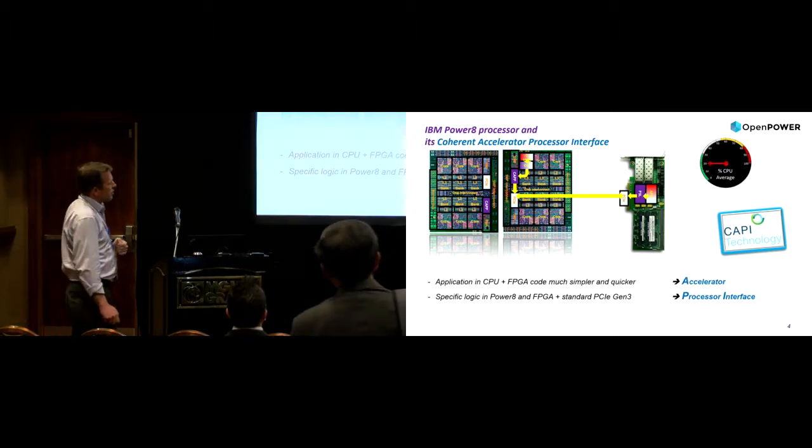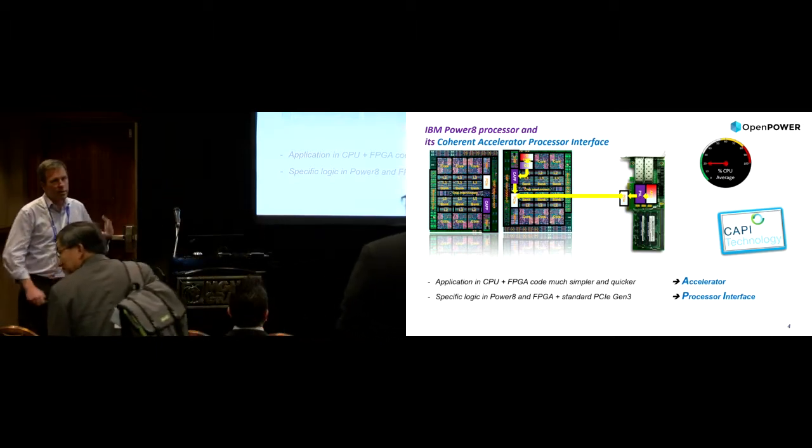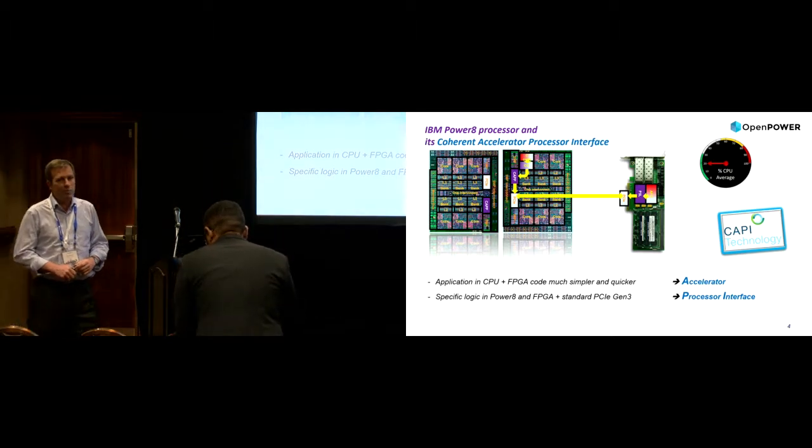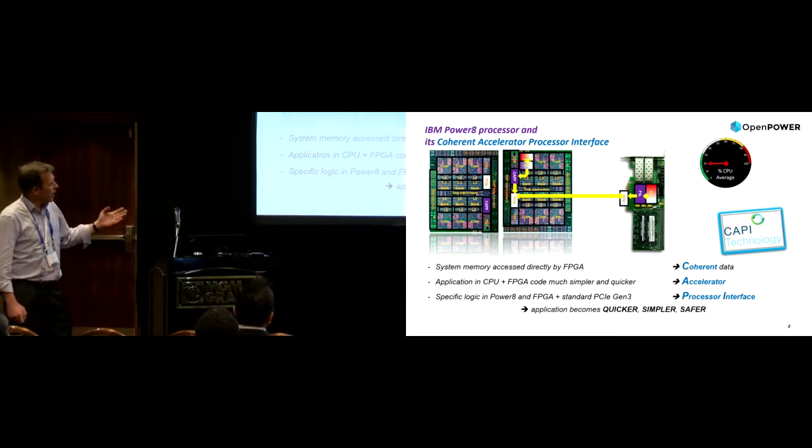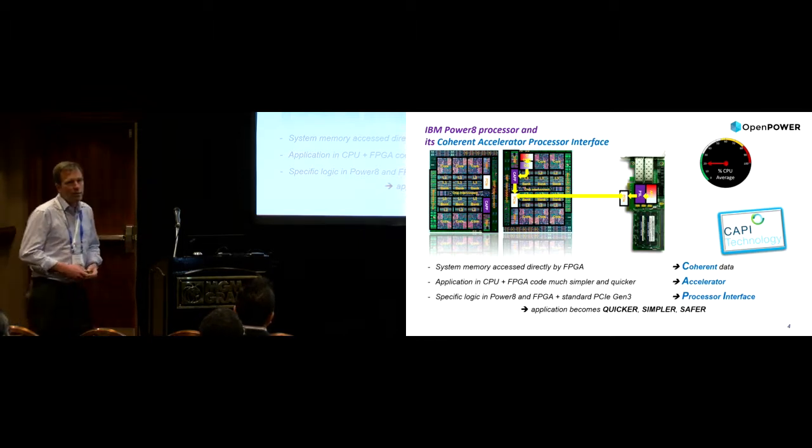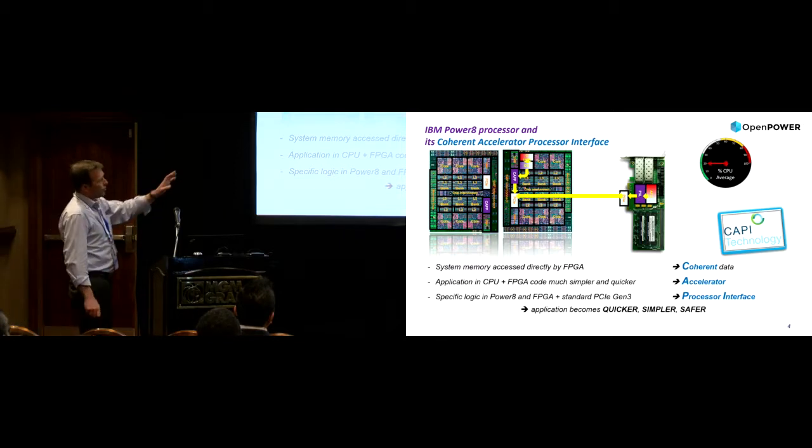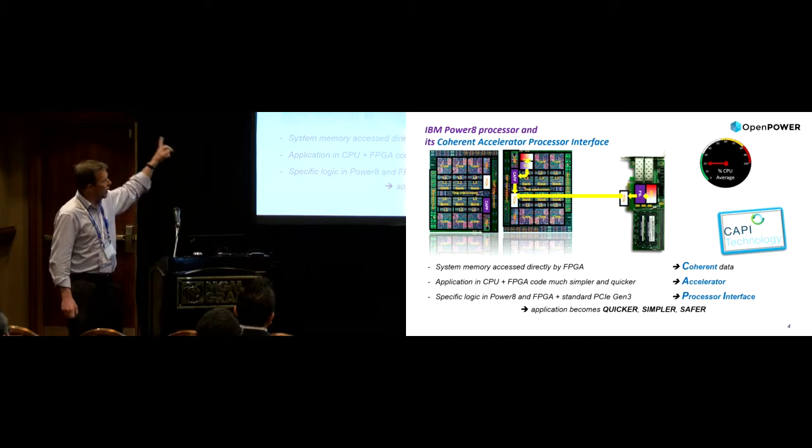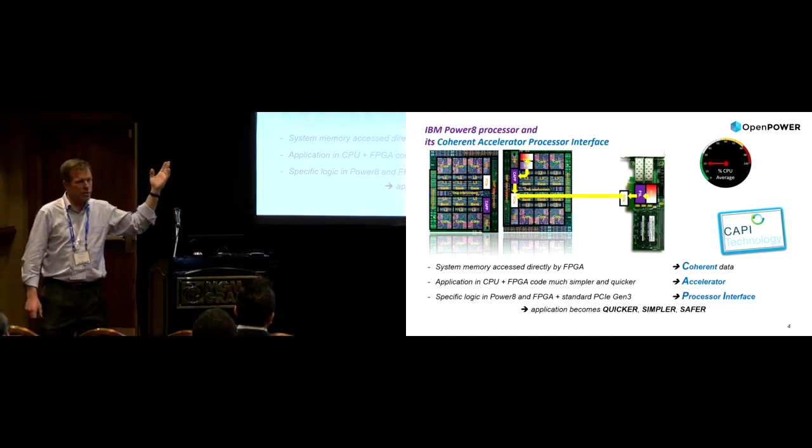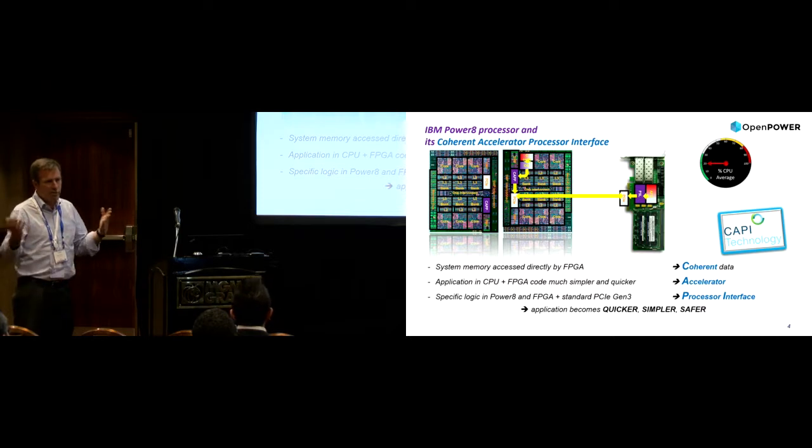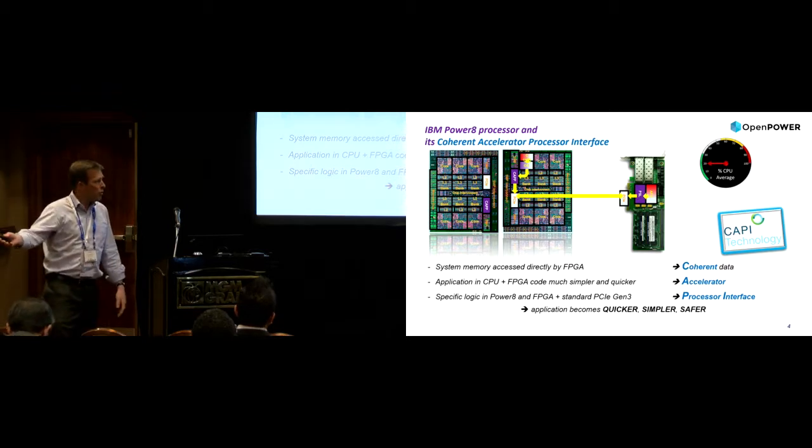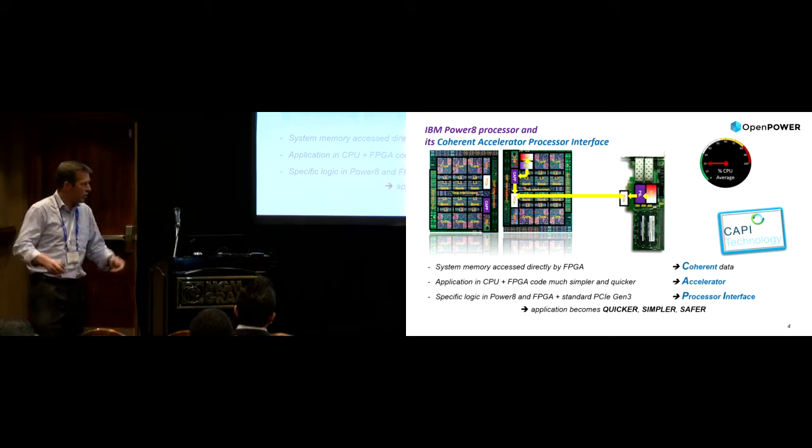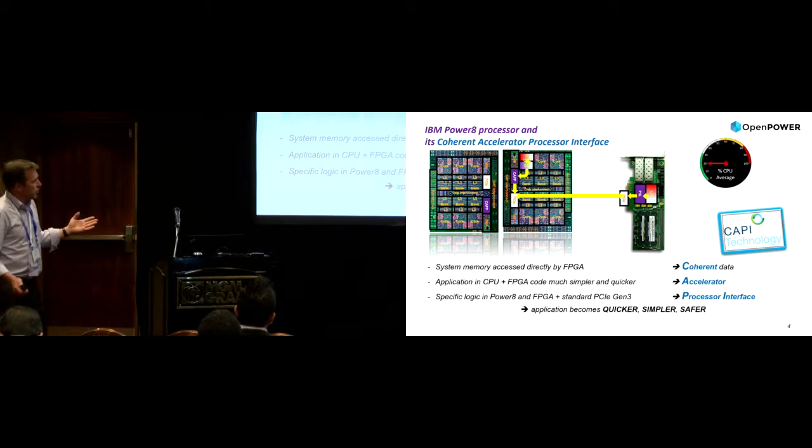So, that's a processor interface. That's good. That's also an accelerator because you may know that FPGA is capable of doing some algorithm that are capable to do much better than CPU. And it also has the coherent data feature, which means very simply that from an external card, so from the FPGA, you are able to have access to the server memory with the same address. Okay? If you have in your application running on CPU address 1,000, you use the same address in the FPGA 1,000. Nothing to change. Quicker, simpler, safer.